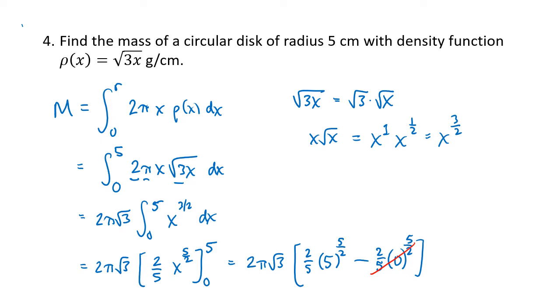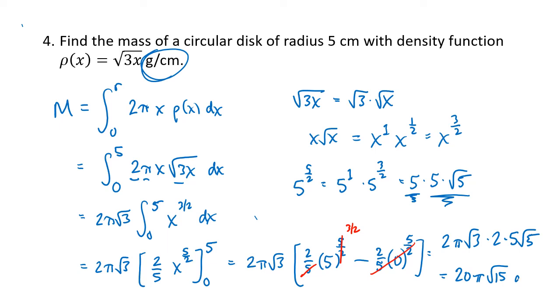We've got 2 fifths times 5 to the 5 halves. We can think of 5 to the 5 halves as being 5 to the first times 5 to the 3 halves. Again, kind of undoing what we did with the x's earlier. Which means that I can divide out this 5 with one of these 5's. And my remaining exponent would be 5 to the 3 halves. Now 5 to the 3 halves is 5 times 5 times the square root of 5. This 5 we divide it out, and this is what's left over, 5 times the square root of 5. So what we have is 2 pi radical 3 times 2 times 5 radical 5. And again, if we want to make this look really nice, we can combine the square roots together. We've got 2 times 2 times 5 is 20. We've got a pi, and then square root of 3 times square root of 5 is square root of 15. Our units are grams per centimeter, so this mass is going to be in grams.